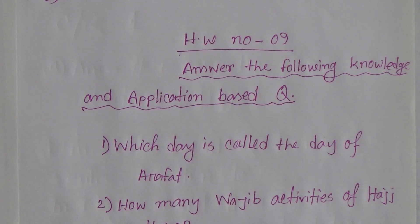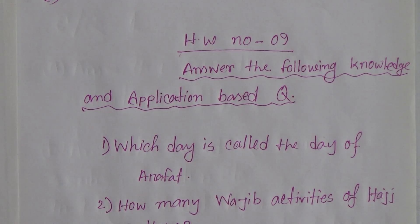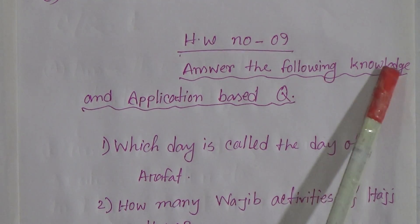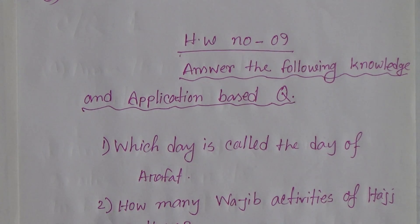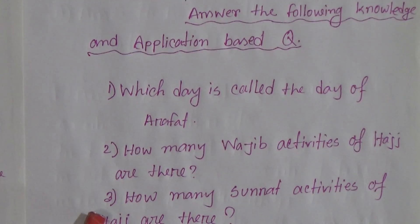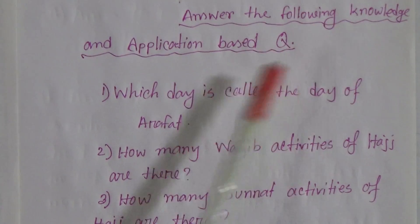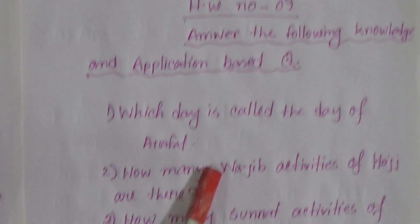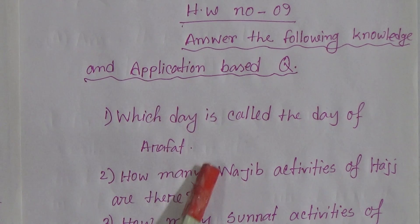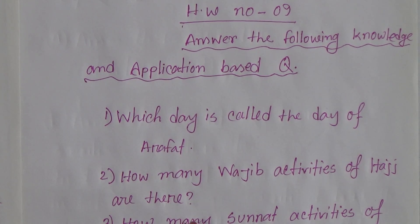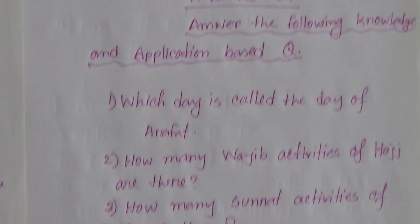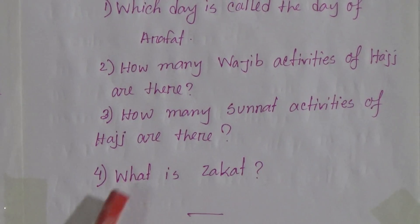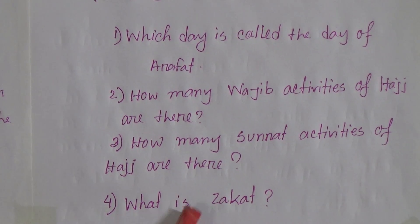Listen carefully. Questions 1, 2, and 3 are knowledge based questions. That means each mark is 1. According to 1 mark, you have to give the answers for questions 1, 2, and 3. And for question 4, according to 2 marks, you have to give the answer.